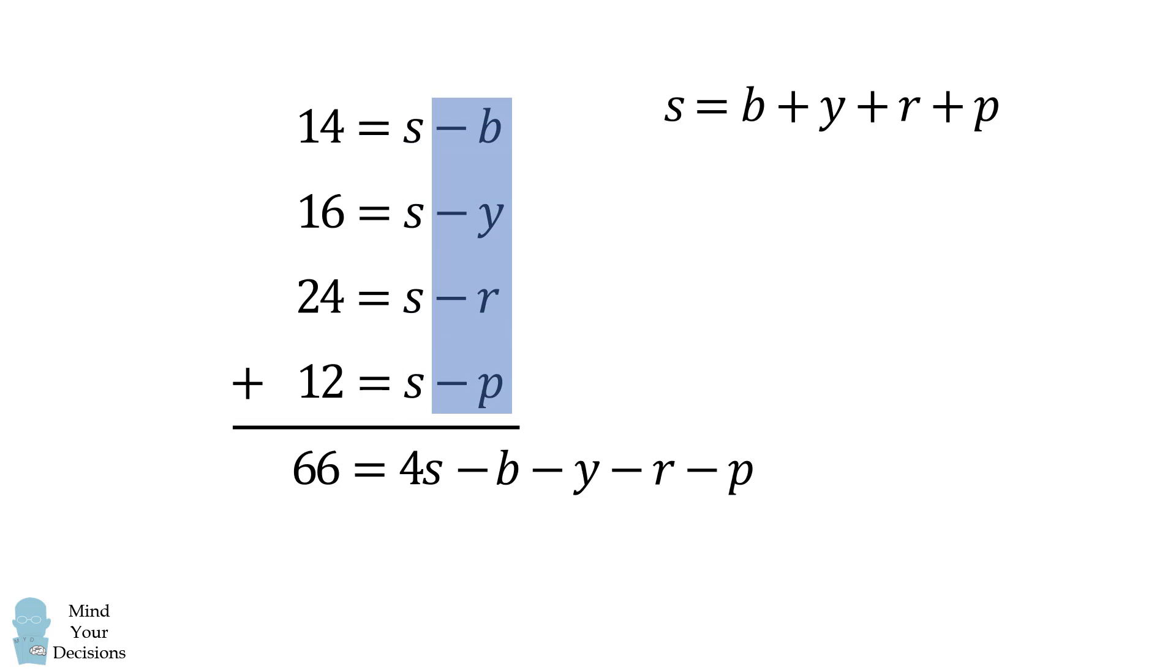So we subtract b, we subtract y, we subtract r, and we subtract p. But we know that s is the sum of b, y, r, and p. Therefore, this term will be equal to negative s.